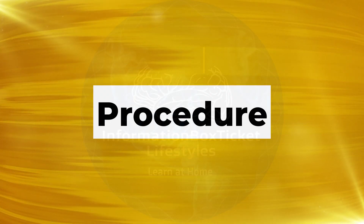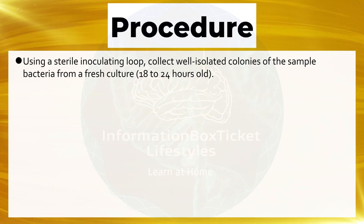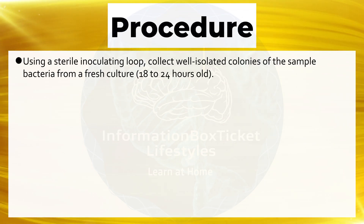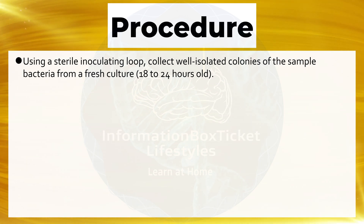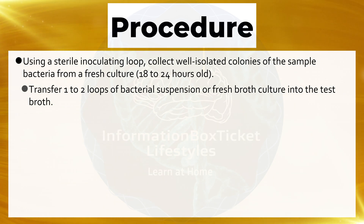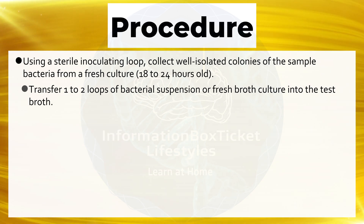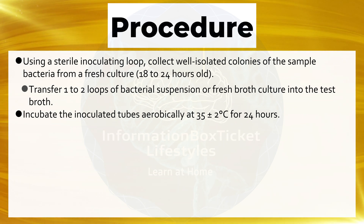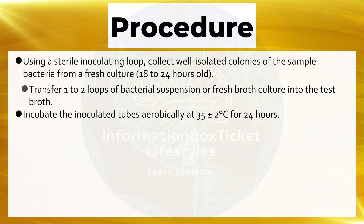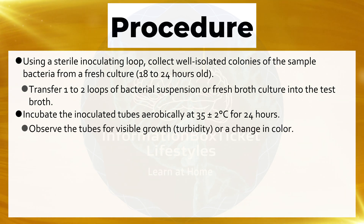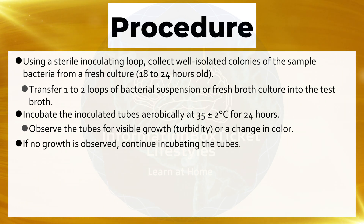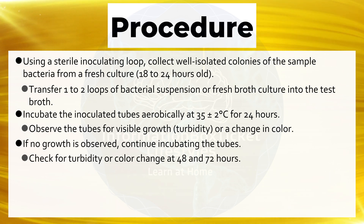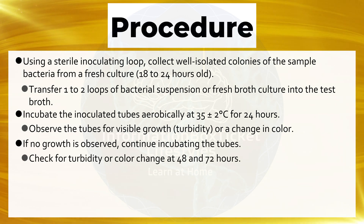Procedure of Salt Tolerance Test: Using a sterile inoculating loop, collect well-isolated colonies of the sample bacteria from a fresh culture (18–24 hours old). Transfer one to two loops of bacterial suspension or fresh broth culture into the test broth. Incubate the inoculated tubes aerobically at 35°C ± 2°C for 24 hours. Observe the tubes for visible growth (turbidity) or a change in color. If no growth is observed, continue incubating and check for turbidity or color change at 48 and 72 hours.